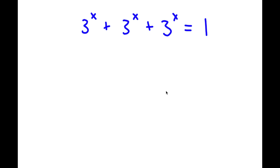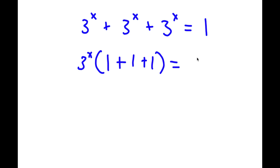All right, so for this problem, I have 3 to the power of x plus 3 to the power of x plus 3 to the power of x is equal to 1. To solve this, I'm going to factor out 3 to the power of x from the left-hand side. 3 to the power of x divided by 3 to the power of x is 1, so I have 3 to the power of x times 1 plus 1 plus 1 equals 1. Simplifying inside the parentheses gives 3 to the power of x times 3 is equal to 1.